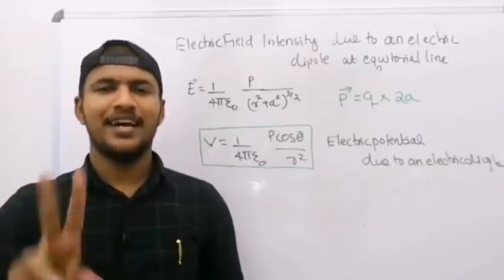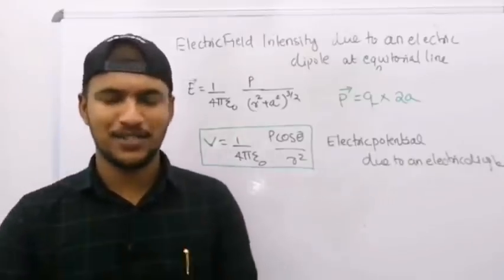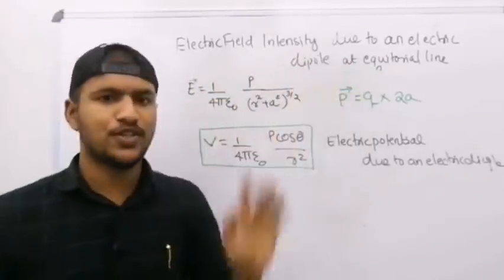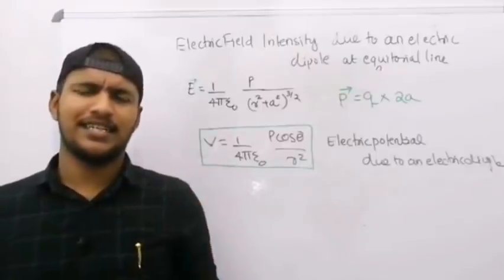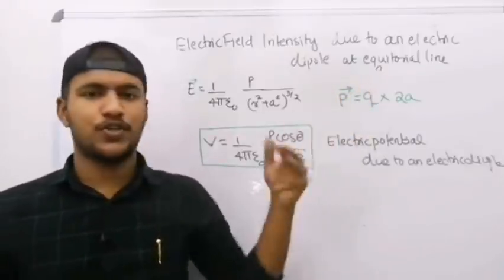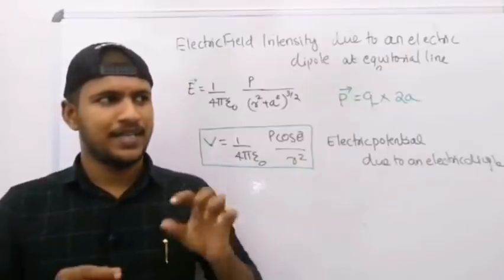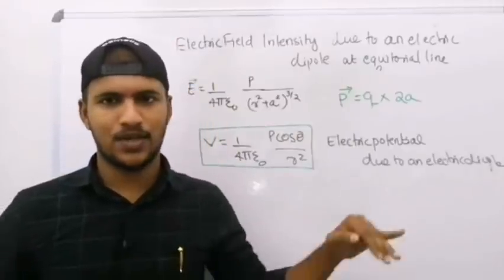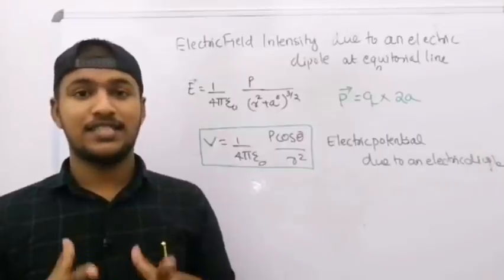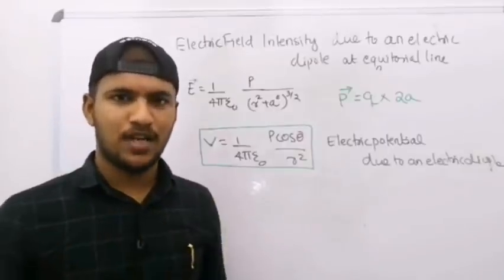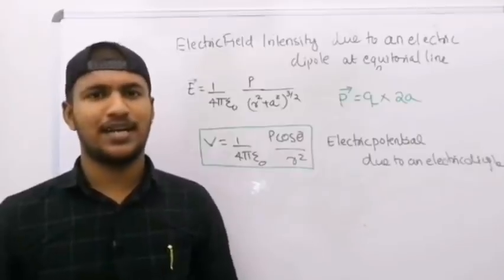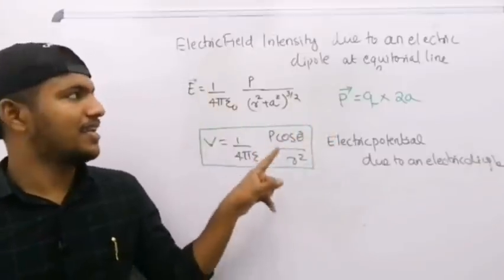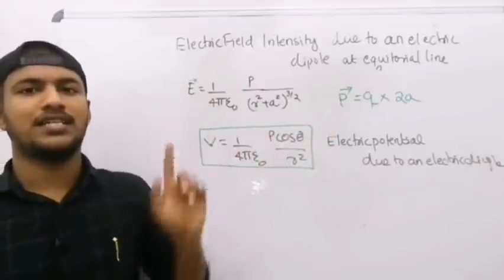Electric Potential due to an electric dipole — that's one of the general equations, that's two equations. We will learn to explain electric field intensity due to an electric dipole on the equatorial line.